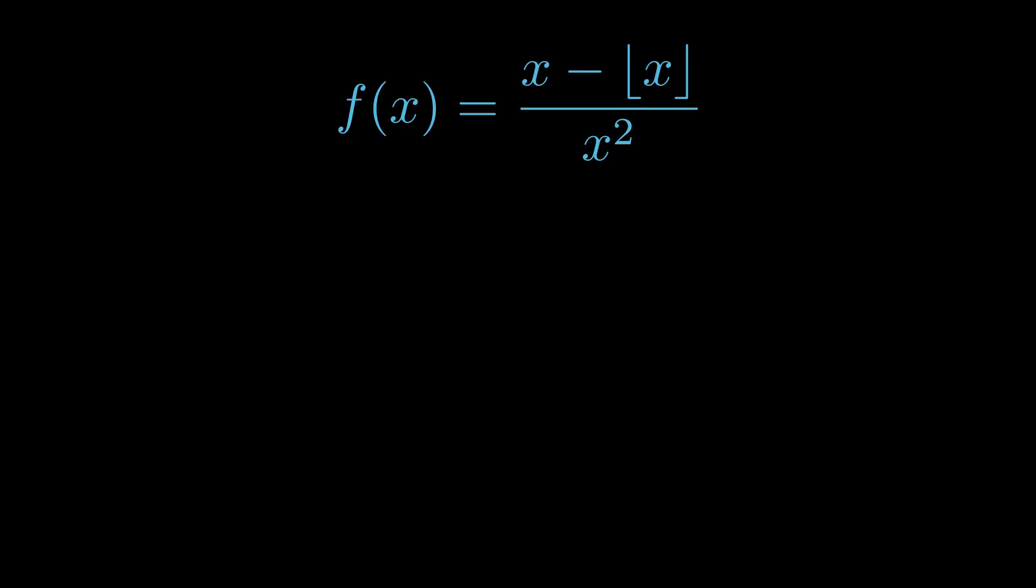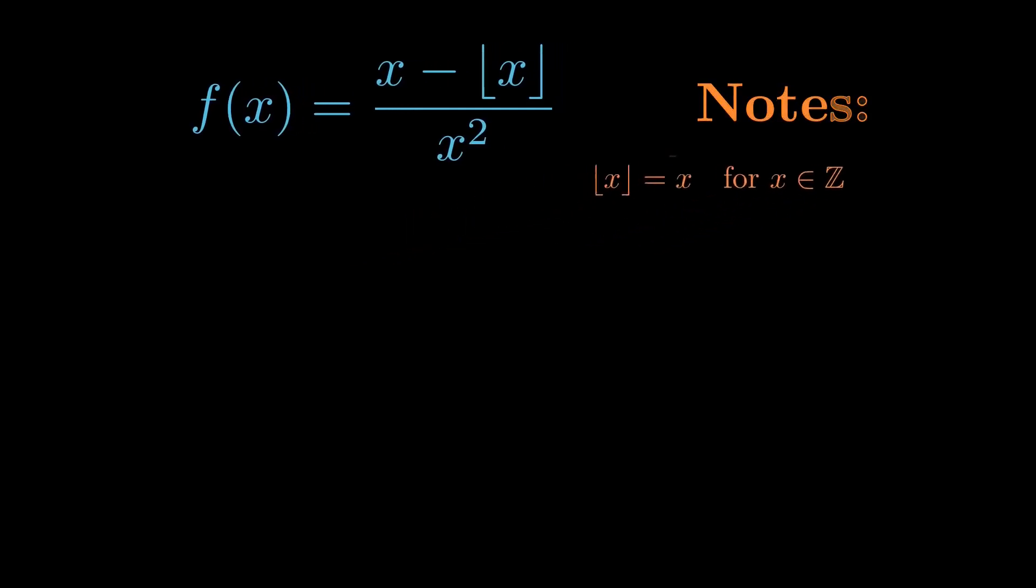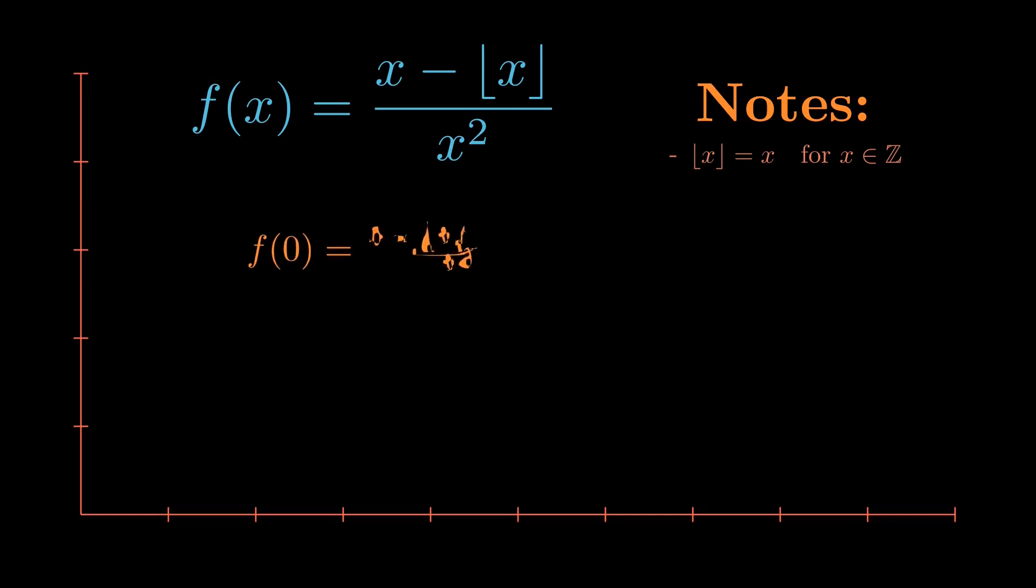Importantly, we know that floor of x is equal to x exclusively when x is an integer. That motivates us first finding the value of this function at integer values. When x is equal to 0, the function is clearly undefined. This is because we are dividing by 0.